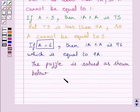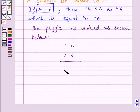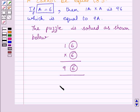We can solve the puzzle as 16 multiplied by 6 gives 96, and the required value of A is 6. This is our required answer. This completes the session. Hope you understood the solution. Take care and bye for now.